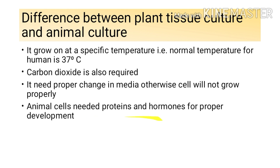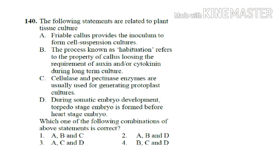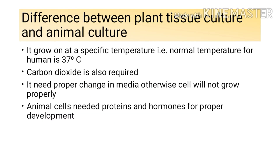Animal cells also need proteins and hormones for proper development. Similarly, plant tissue culture also needs growth promoters such as auxin and cytokinin, just as animal culture also needs growth promoters. So this is all for this video lesson. I hope you have understood the lesson. If you face any confusion regarding this topic, you can ask me in the comment section. Thank you guys, thank you so much.